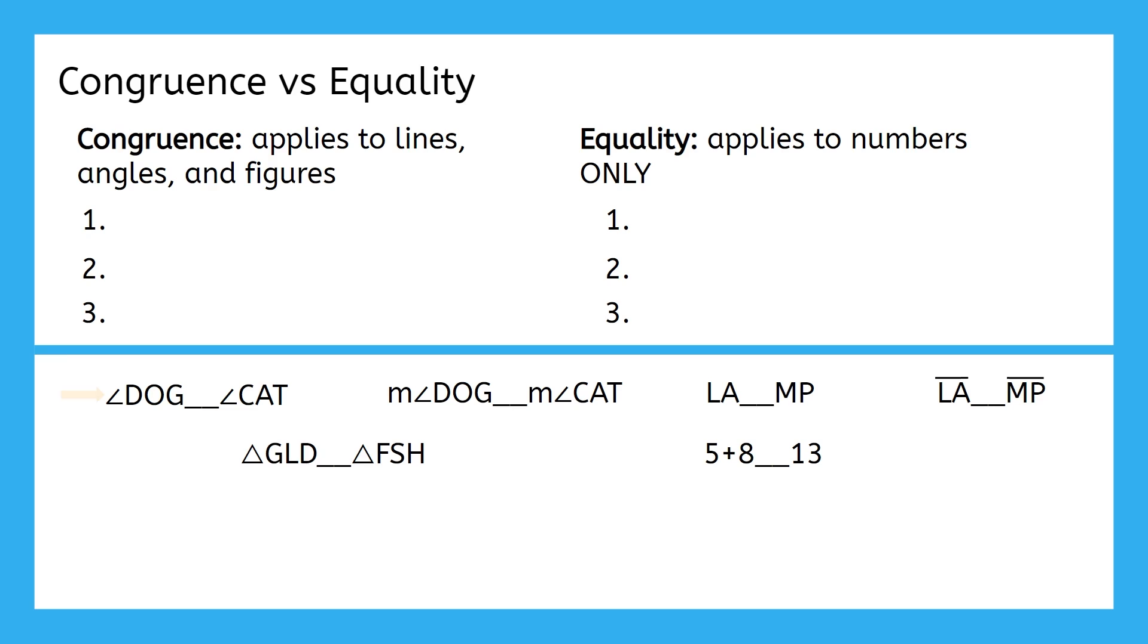Let's start with angle DOG and angle CAT. These are referring to the angles, so that means I need congruence. Now, if we look at the measure of angle DOG and the measure of angle CAT, this is referring to how big the angles are in degrees, which is a number, so this one is equality.